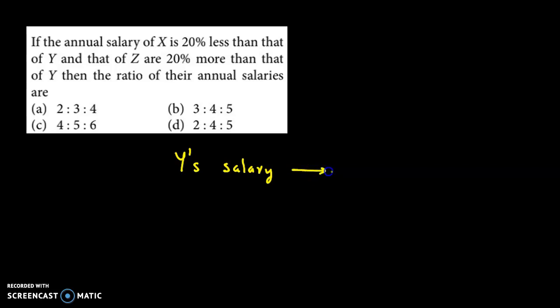We assume this as 100. So X's salary will be 20% less. Now if we take 20% less from 100, it becomes 80. And Z's salary.